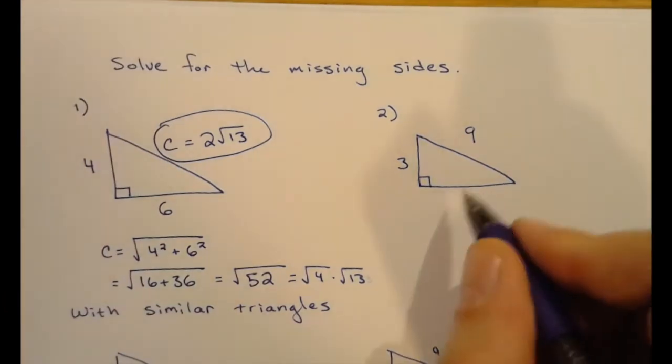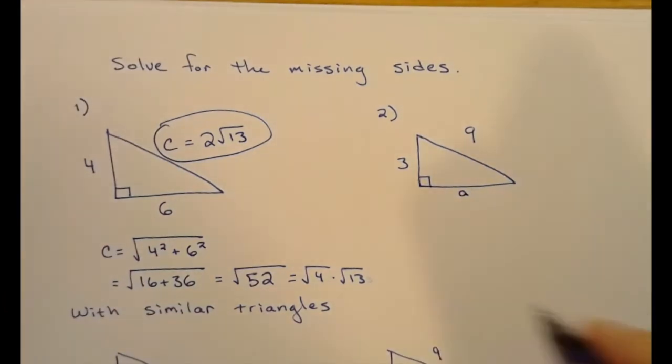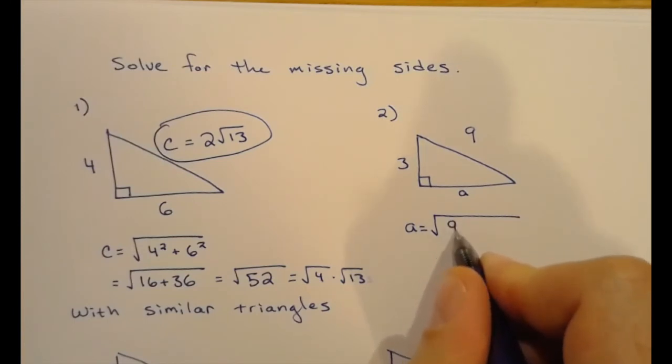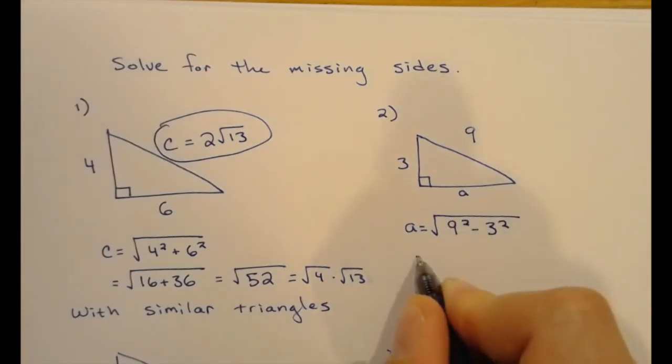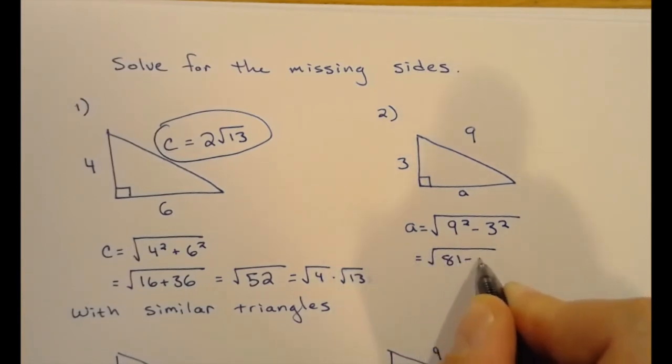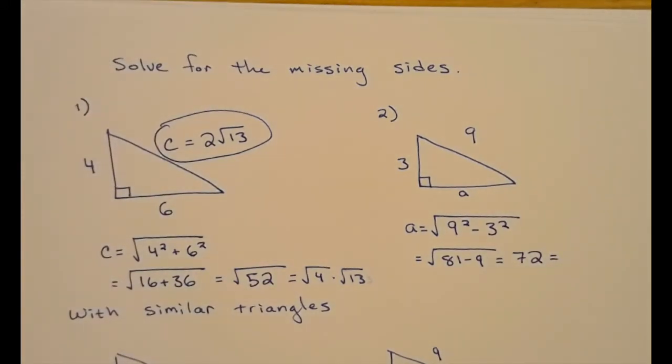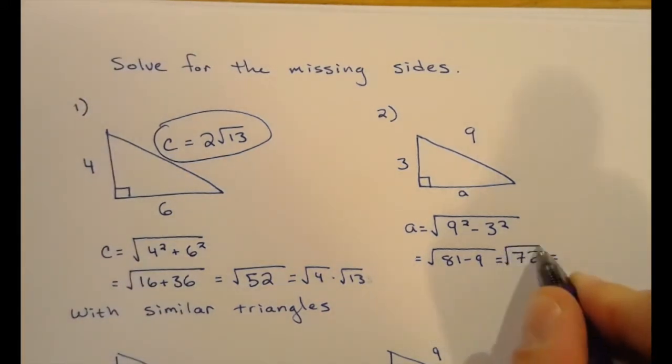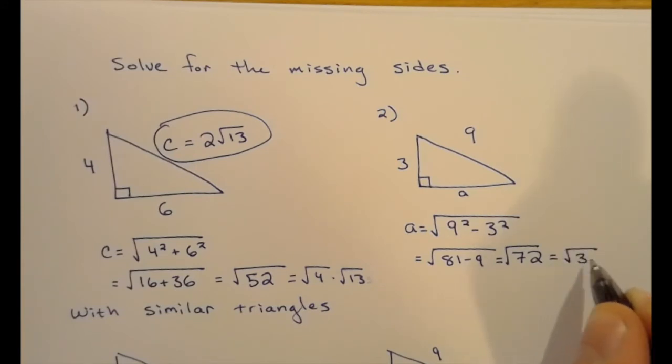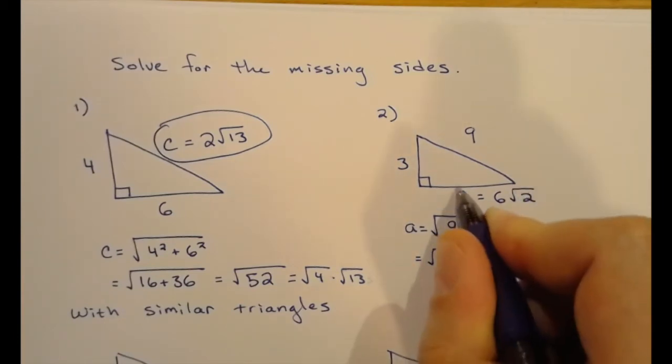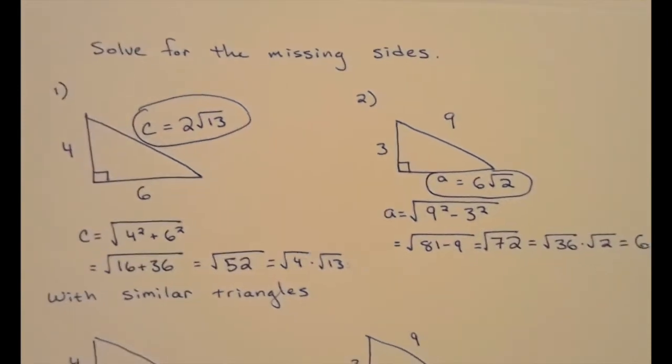When going for one of the legs, whether you call it a or b, it doesn't really matter. This time we're going to use the leg version of the Pythagorean theorem where we take the square root of the hypotenuse squared minus the known leg squared. So we got 81 - 9. That's 72. And 72 is 36 times 2. So √72 is √36 times √2, 6√2. Now that's all well and good. And you can always get the answer doing the Pythagorean theorem like this.